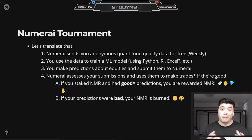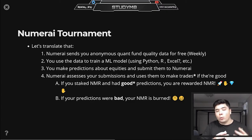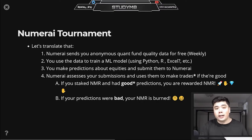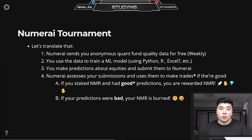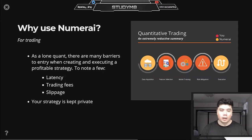If your predictions were good and you staked Numeraire on your model, you are rewarded with Numeraire. If your predictions were bad and you staked Numeraire, your Numeraire is burned. A key point here: Numerai does not gain any Numeraire when we submit bad predictions — they do not win when we lose. The Numeraire is just burned and essentially evaporates. Numerai is incentivized for us to succeed, which makes for a really good community and relationship between participants and Numerai.